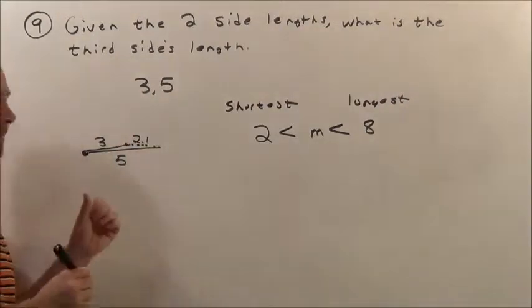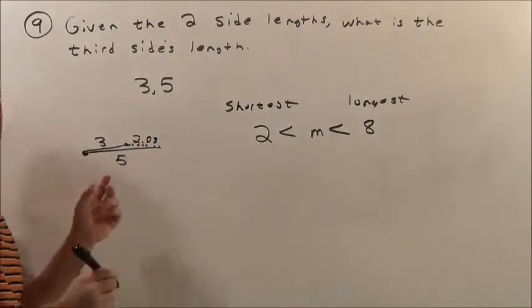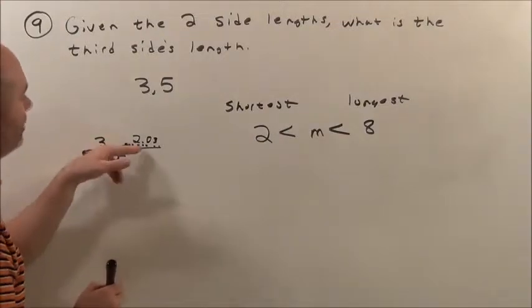So that's going to be a little bit more than 2, maybe 2.1, or 2.031, or 2.0001. So, that would be the shortest we could make it.